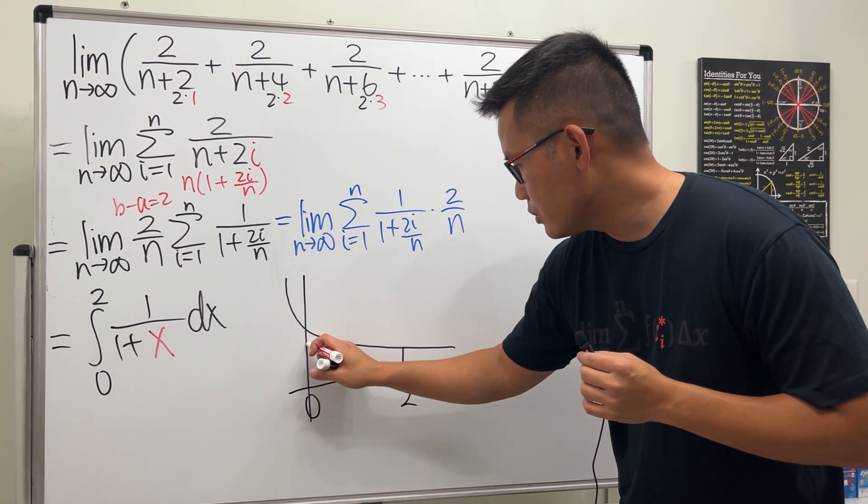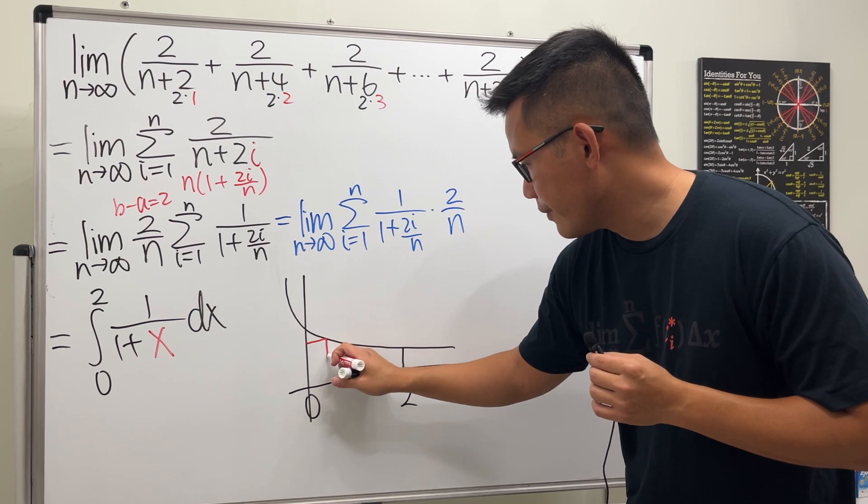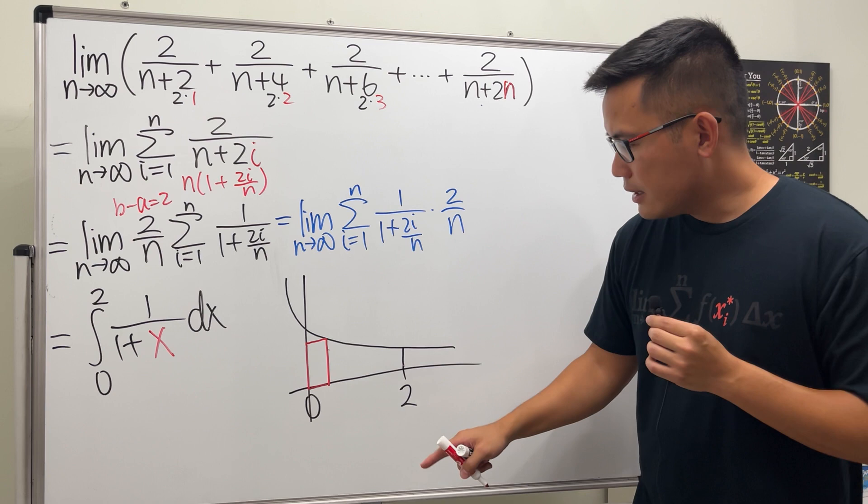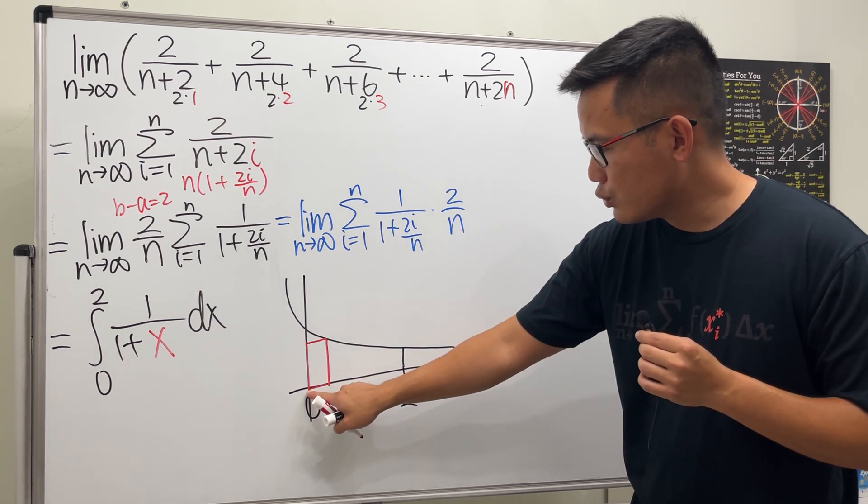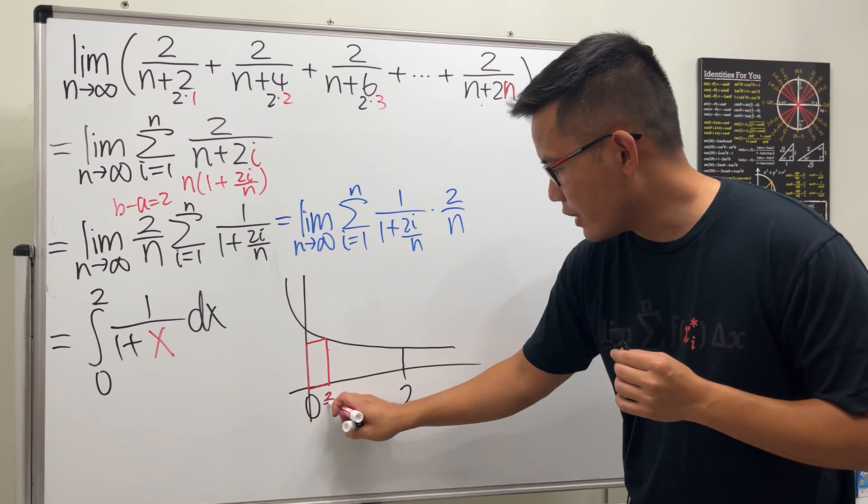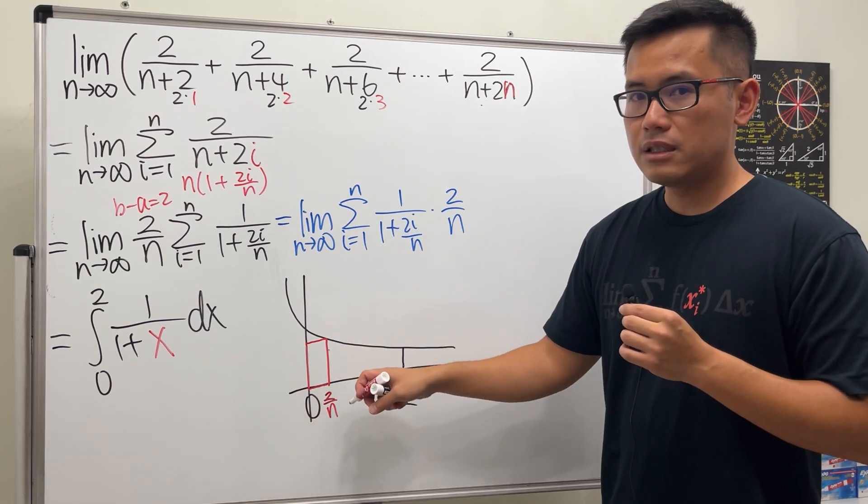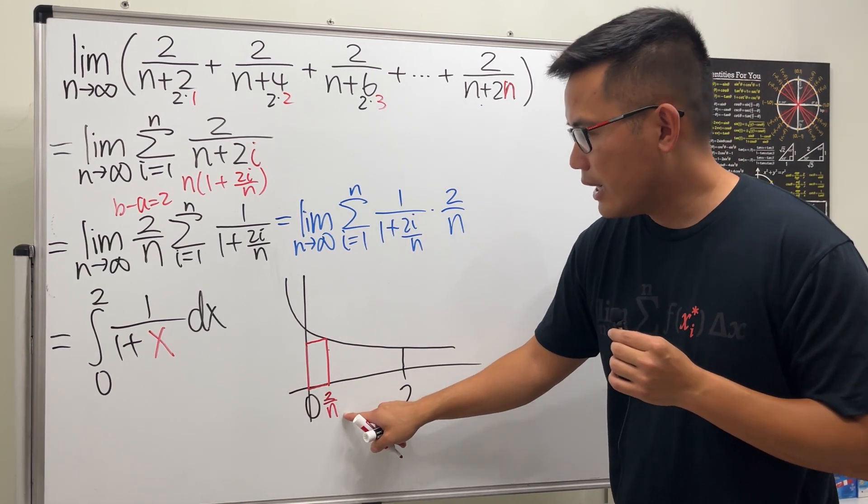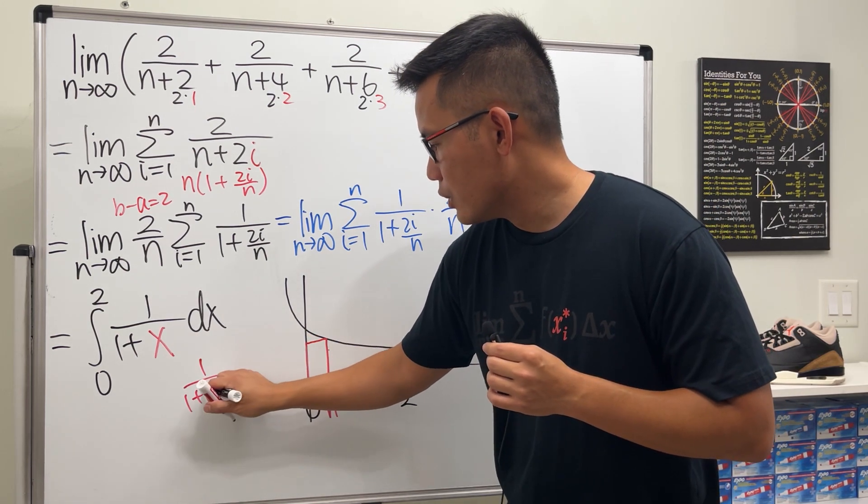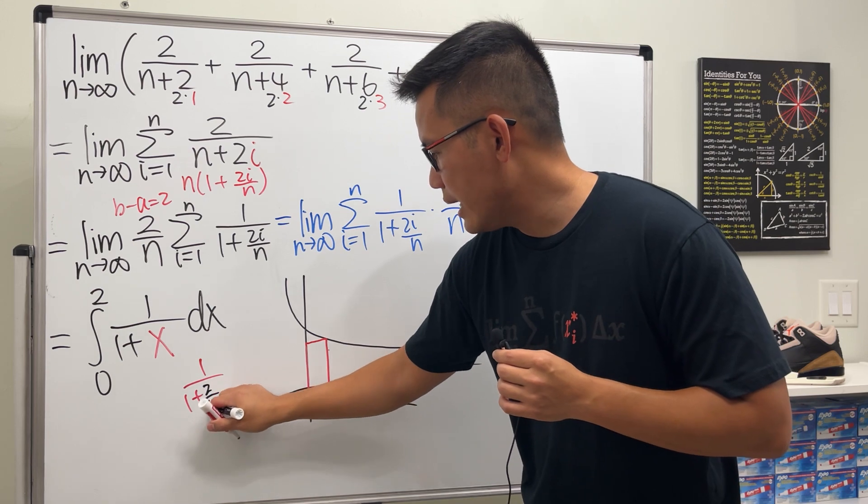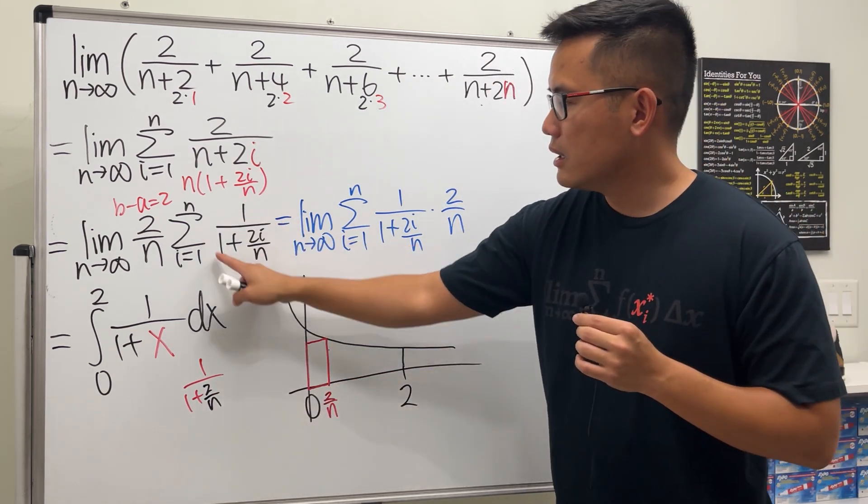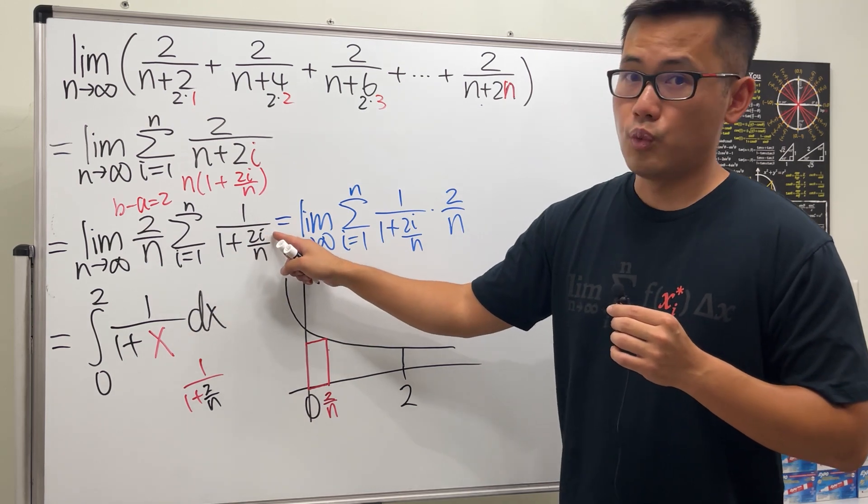So if you look at the picture, we can have a rectangle right here. And because the width is 2 over n, so that means from here to here, the x value is just 2 over n. How do we get the height? We put the 2 over n into the x. And you see, we will just get 1 over 1 plus 2 over n here. And what's this? That's precisely this expression when i is equal to 1.